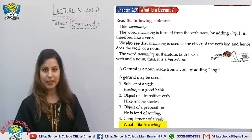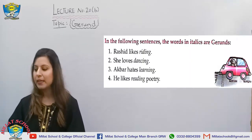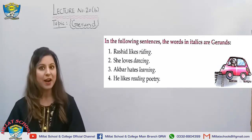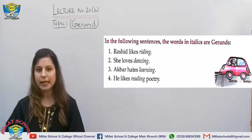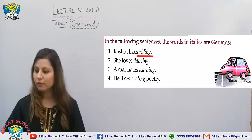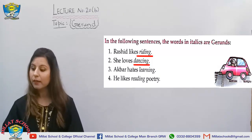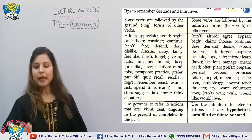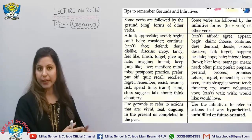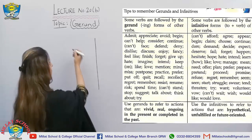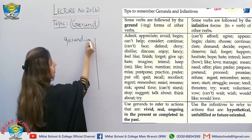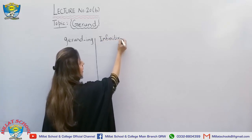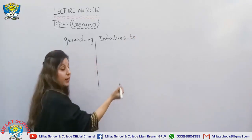Now you are able to identify gerunds. On page 105, the words in italics are gerunds — like 'Rashid likes writing,' and also 'dancing,' 'learning,' 'reading.' All these italic words are our gerunds. On page 106, there are two columns: one for gerunds, which have the -ing suffix added, and the other for infinitives, which have the preposition 'to' added with the verb.